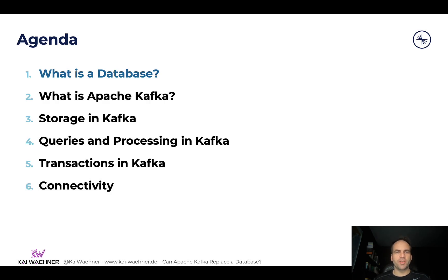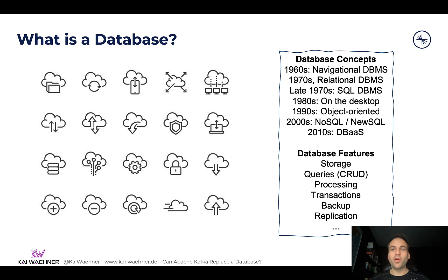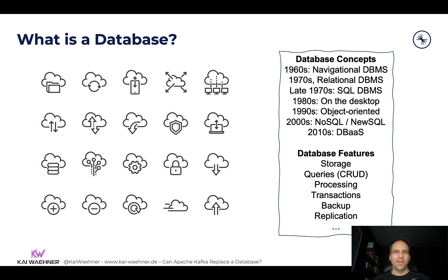Let's begin with the definition of a database — and here's the first problem. There are so many databases. The first one everybody thinks about in a modern world is a SQL database management system like Oracle or Postgres. But in addition to that there's a lot of NoSQL stuff. Today in the cloud, many people think about S3 buckets as a native database. There are also key-value stores, document stores, time series databases, and so on. While they share similar functions like storage, queries, and transactions, every one of these approaches is very different and solves specific use cases.